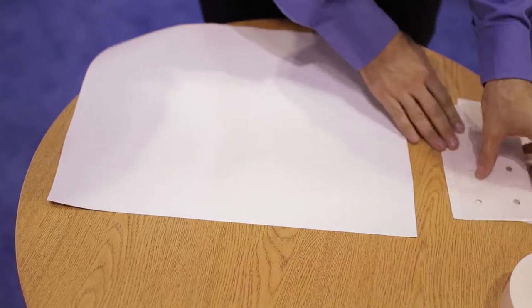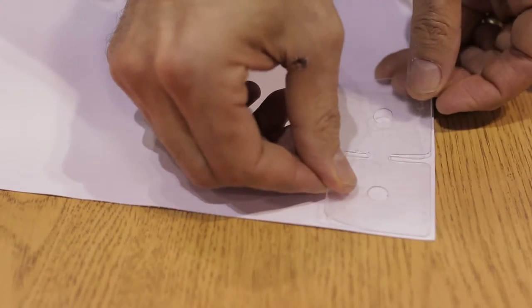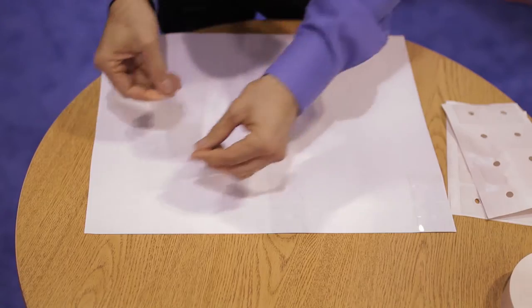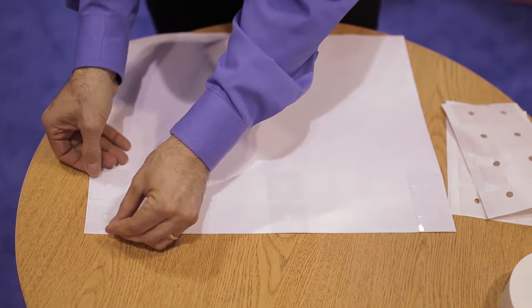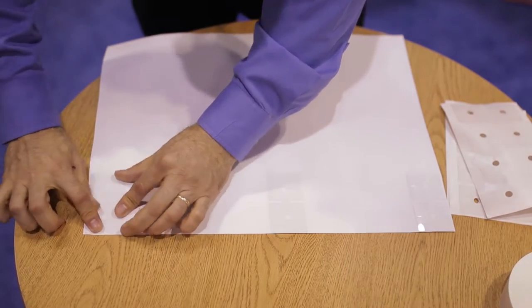The first step is to place Banner-Ups Bravo tabs on the back of the banner flat without folding. I put them at the corner and then every two to three feet along the edges, including the side edges.